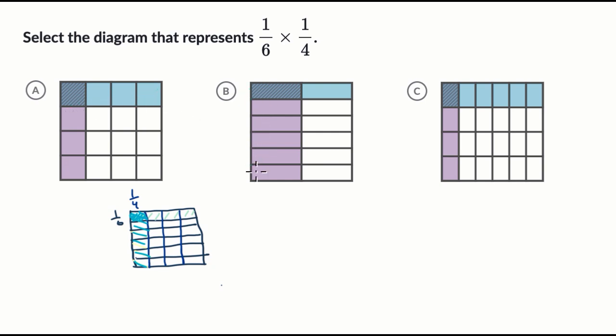This one looks like 1 sixth, because this is a sixth right here, but it's 1 sixth times 1 half, because in this direction we're only split into two.